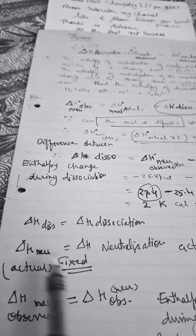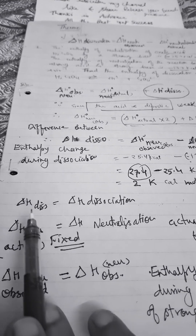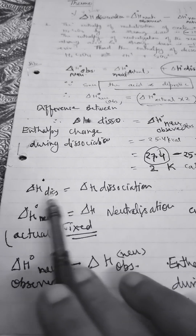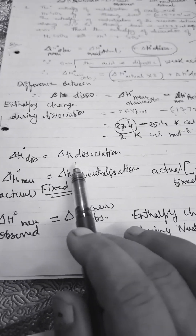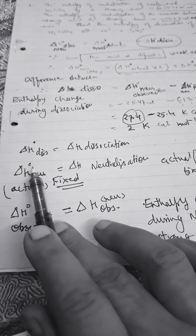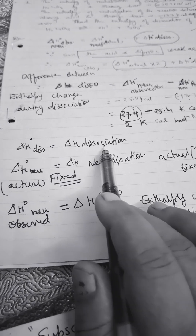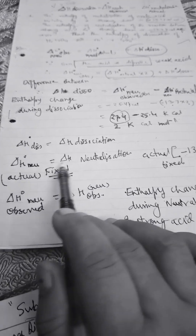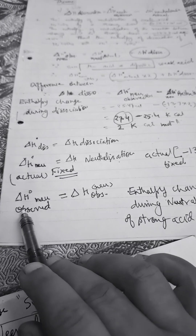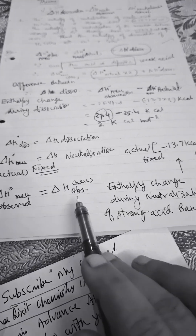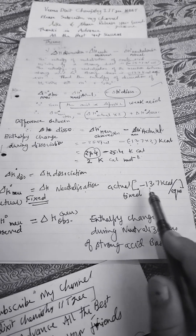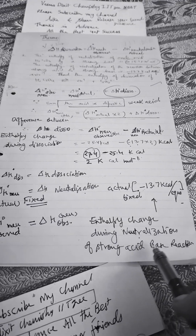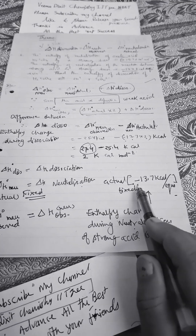We are discussing heat of neutralization. Delta H° dissociation is the standard enthalpy of dissociation — heat energy absorbed during dissociation. Delta H° neutralization is the heat energy released, so it will always be a negative value. For a strong acid and strong base, the actual value is fixed at minus 13.7 kilocalorie per equivalent.